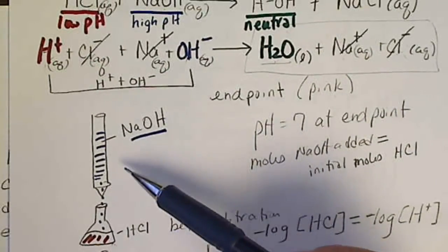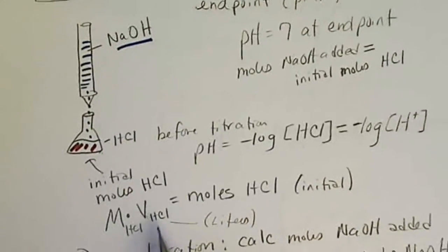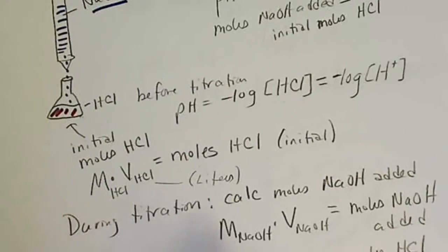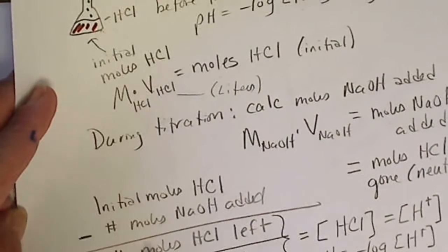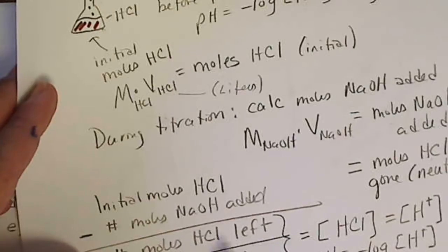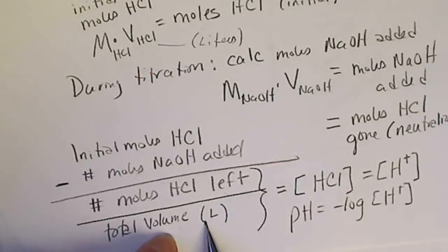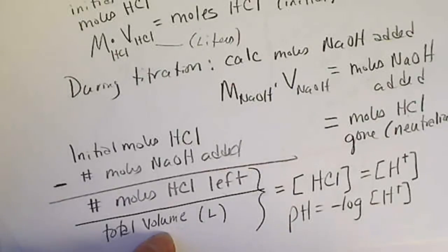As we begin to add sodium hydroxide in increments, we're going to need to come back to our initial moles of acid that we have and subtract from that the moles of the sodium hydroxide. The difference between those two values is the moles of HCl remaining. We divide that by the volume of our acid plus the volume of the base added, convert to liters, and that gives us the new concentration of the acid.